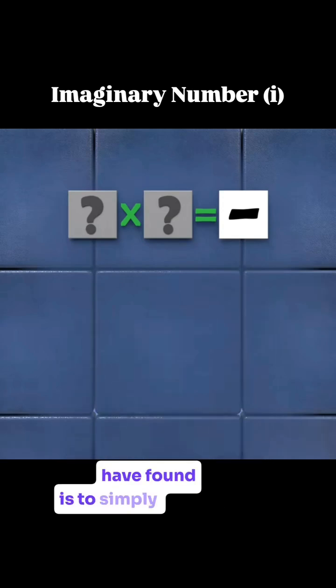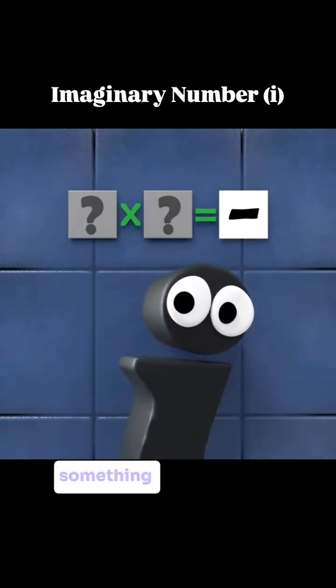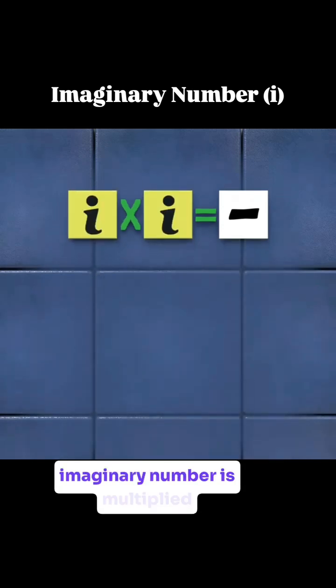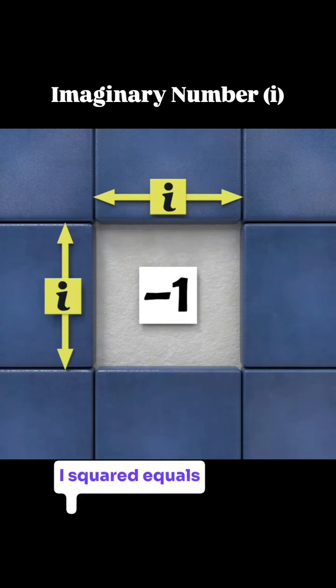The solution mathematicians have found is to simply say there exists a different kind of value, neither negative or positive, but something logically different. If this kind of value, called an imaginary number, is multiplied by itself, it creates a negative value. The letter i can represent the length of the side of our square hole. i squared equals negative 1.